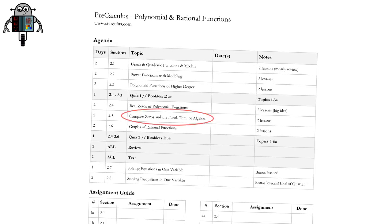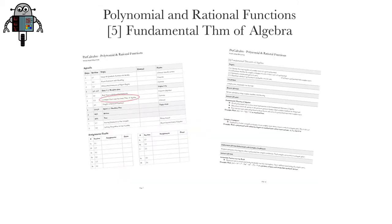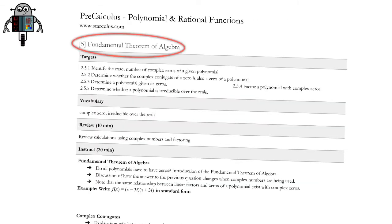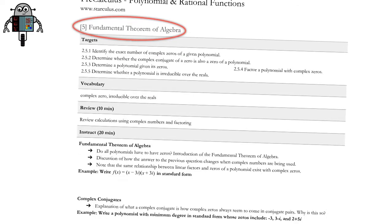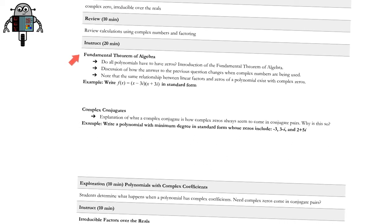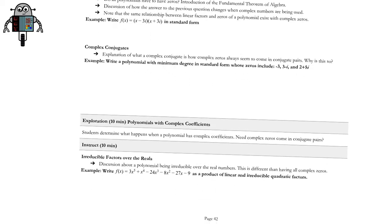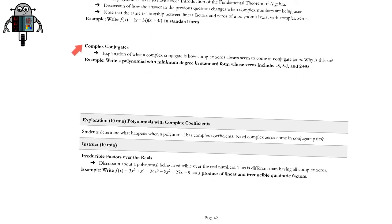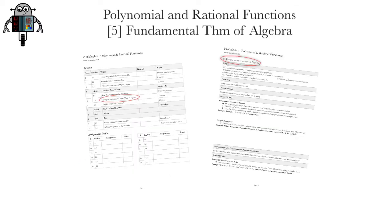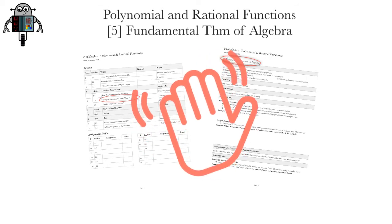Welcome to Topic 5, Complex Zeros and the Fundamental Theorem of Algebra. This one-lesson topic highlights the Fundamental Theorem of Algebra. We'll learn about the Fundamental Theorem of Algebra, complex conjugates, and irreducible factors over the reals. I'm Mr. Stark, and this is Polynomial and Rational Functions.